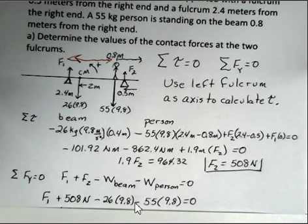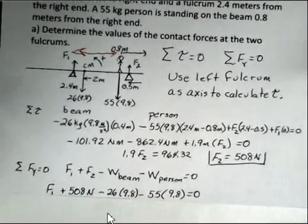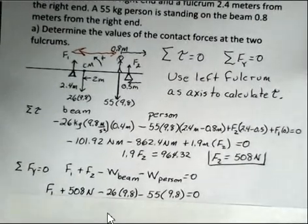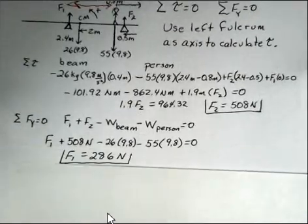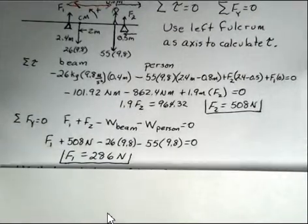Putting in what we know for F2, 508 newtons. The two weights are calculated here. So one equation, one unknown. And we can go ahead and find that F1 has a value of 286.